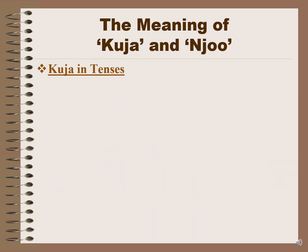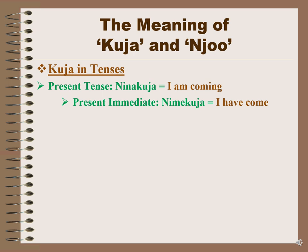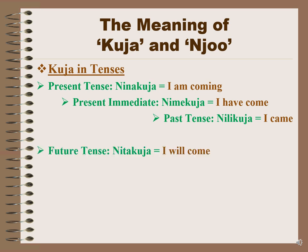Kuja in tenses: the present tense is ninakuja, meaning 'I am coming.' The present immediate tense is nimekuja, meaning 'I have come.' The past tense is nilikuja, meaning 'I came.' So what is added is just the prefix: ninakuja, nimekuja, nilikuja. The future tense is nitakuja, meaning 'I will come.'